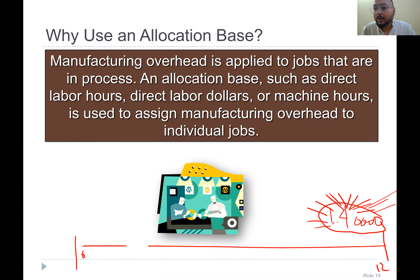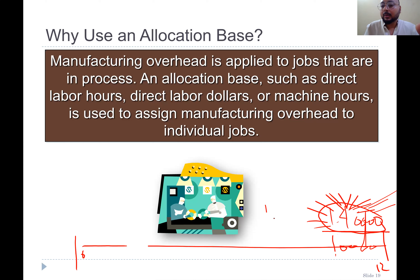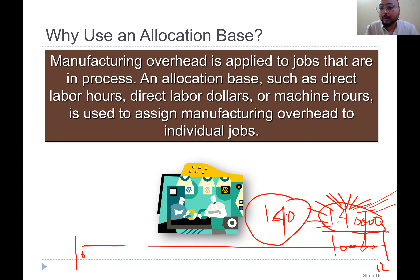The smart way to predetermine manufacturing overhead is: your previous year's total manufacturing overhead was $140,000 — or if your factory is new, you look at a comparable company. Their manufacturing overhead was $140,000 based on 10,000 working hours — meaning the laborers worked 10,000 hours in the whole year. So per hour, the manufacturing overhead is going to be $14.